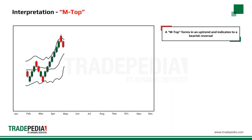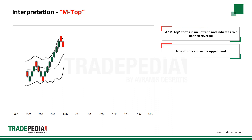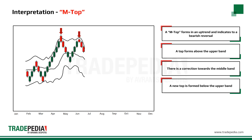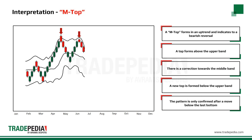The M top forms in an uptrend and indicates a bearish reversal. First, a top forms above the upper band. There is a correction towards the middle band, and then a new top is formed below the upper band. The pattern is only confirmed after a move below the last bottom.